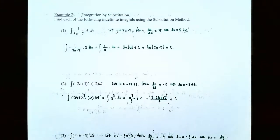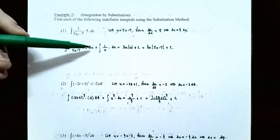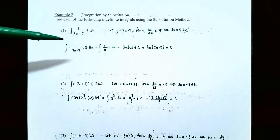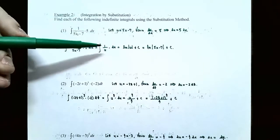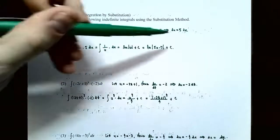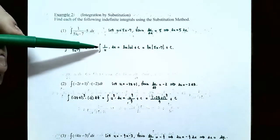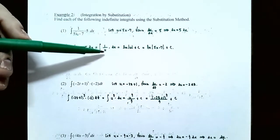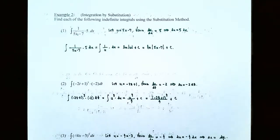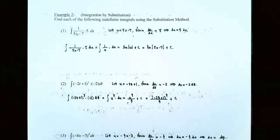Let's change the entire integrand to be in terms of u. Starting with the integral of 1 divided by 5x minus 7 times 5 dx — replacing the denominator with u gives 1 divided by u, and replacing 5 times dx with du. Now the entire integral is in terms of u: the integral of 1 divided by u, du.